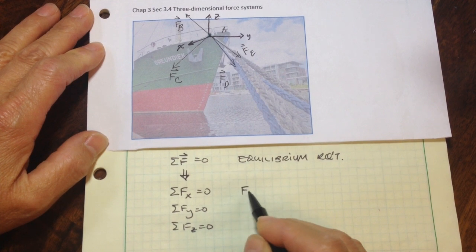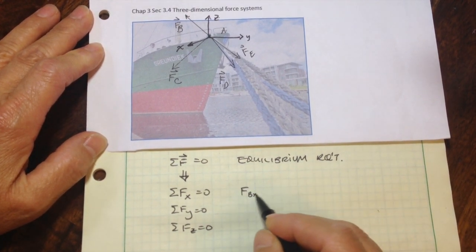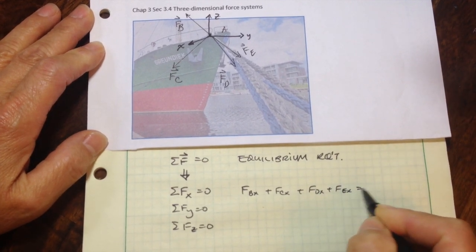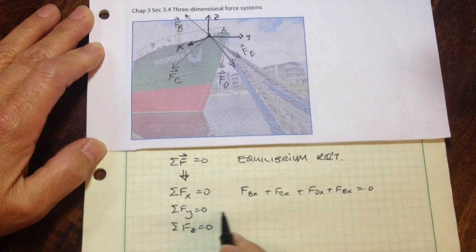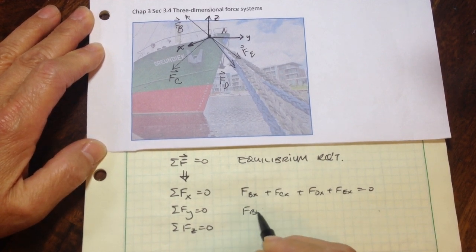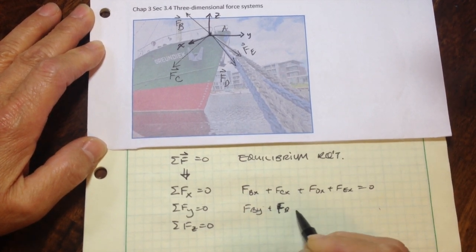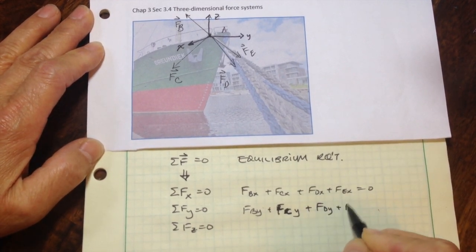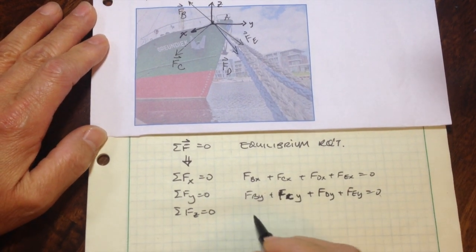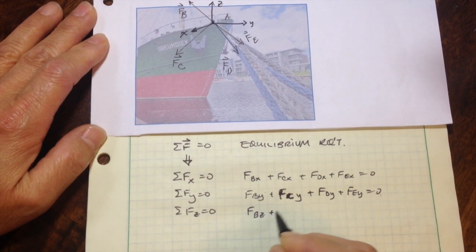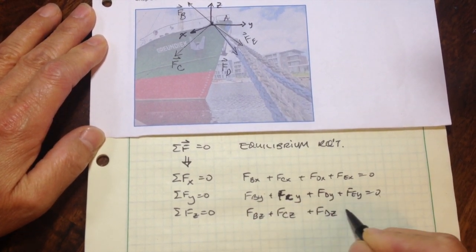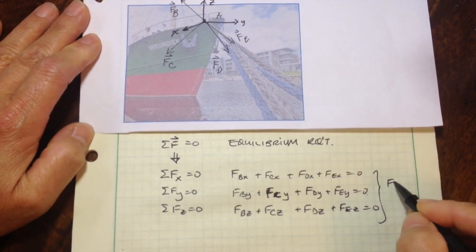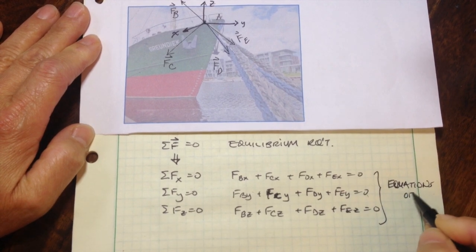For the X components, I'll have the X component for force B, X component for force C, X component for force D, and E, and it all has to equal zero. I do the same for the sum of the forces in the Y: FBY plus FCY plus FDY plus FEY, and that has to equal zero. And same for the Z: FBZ plus FCZ plus FDZ plus FEZ must equal zero.